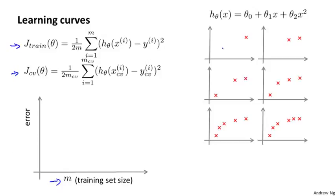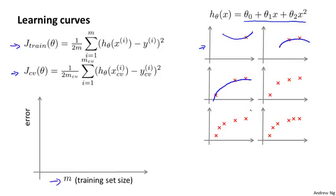Suppose I have only one training example and I'm fitting a quadratic function. If I have only one training example, I'm going to be able to fit it perfectly — I'll have zero error. If I have two training examples, with a quadratic function I can also fit that very well, and if I'm using no regularization I could fit it perfectly. And if I have three training examples, I can fit the quadratic function perfectly again. So if m equals one, two, or three, my training error is going to be zero, assuming I'm not using regularization — or slightly larger than zero if I am.